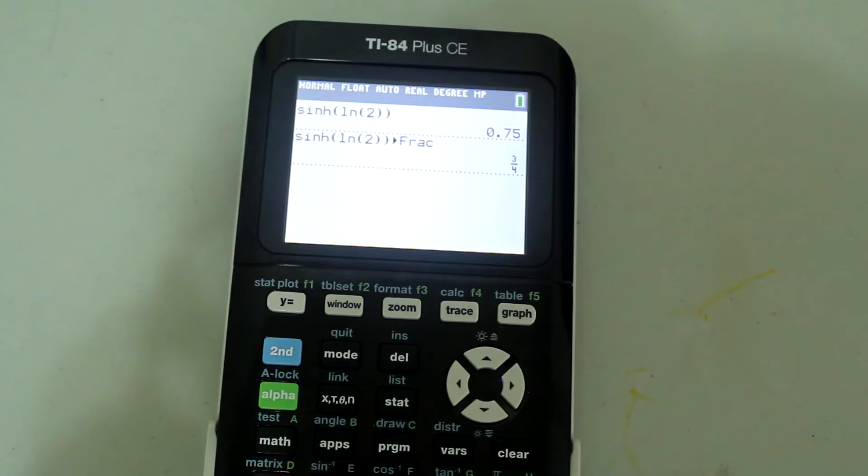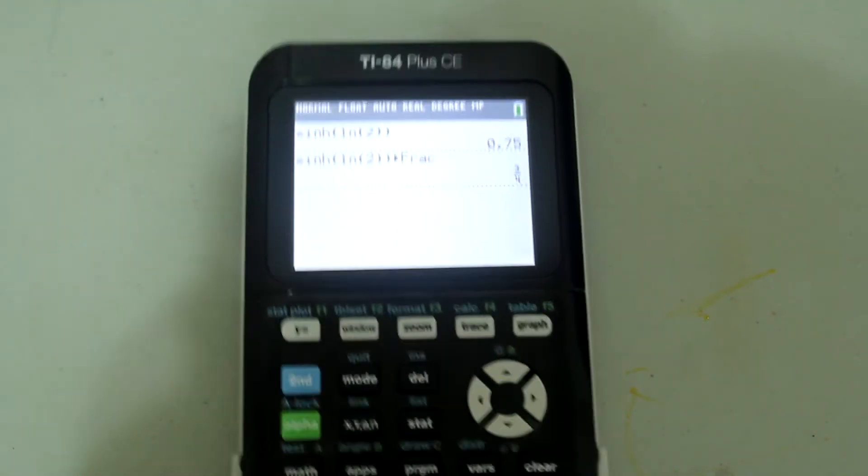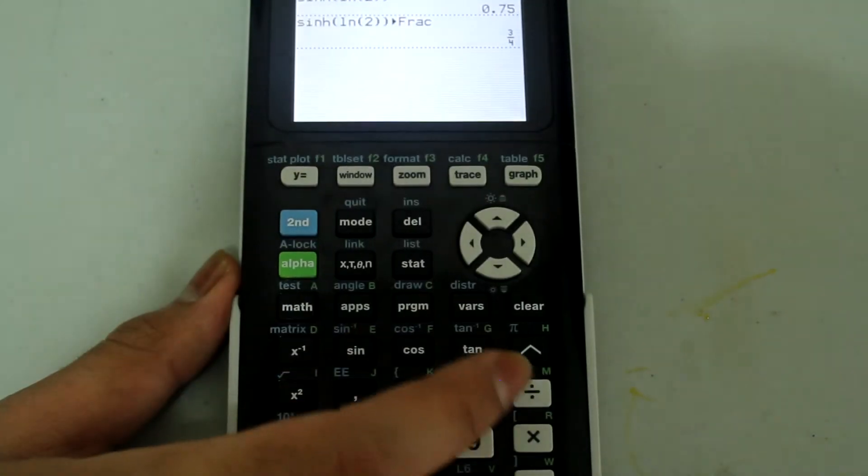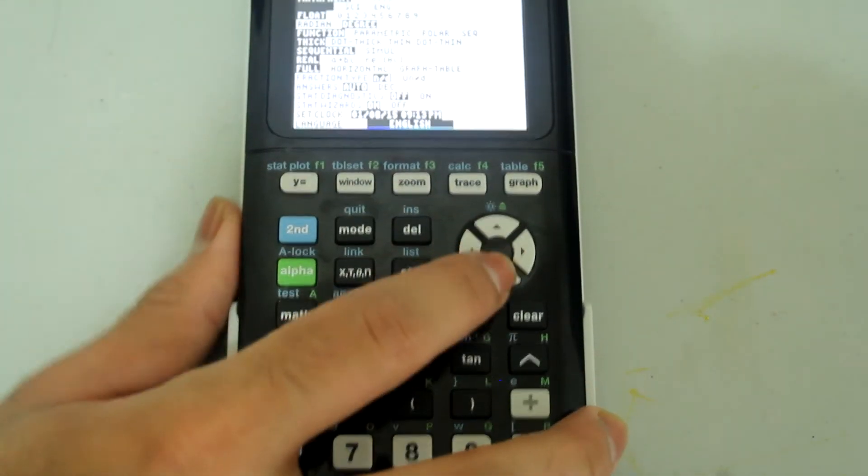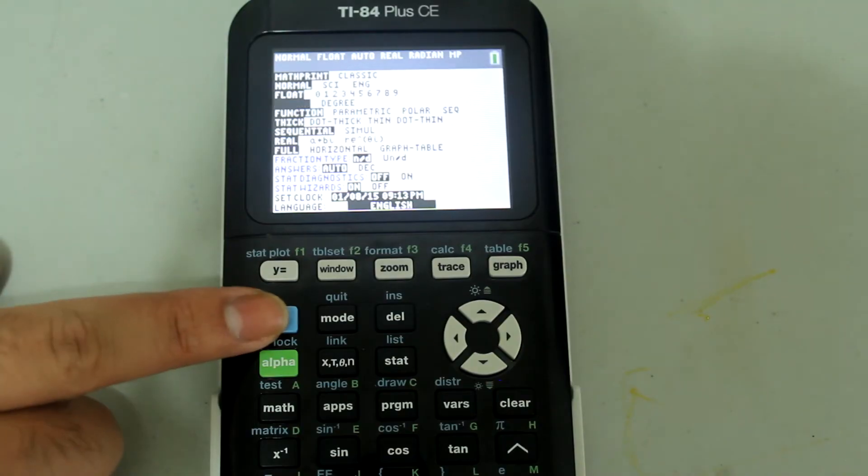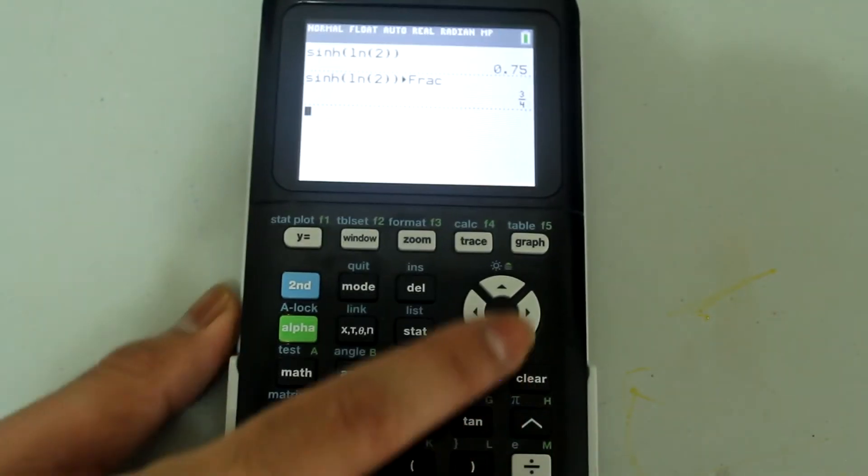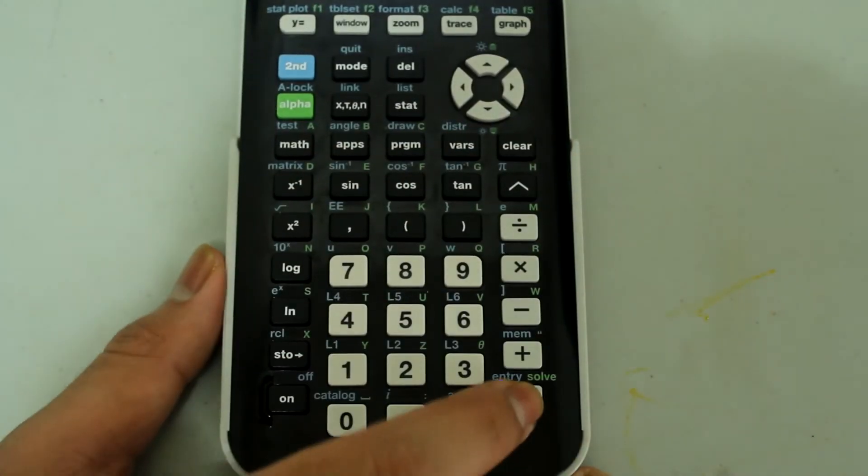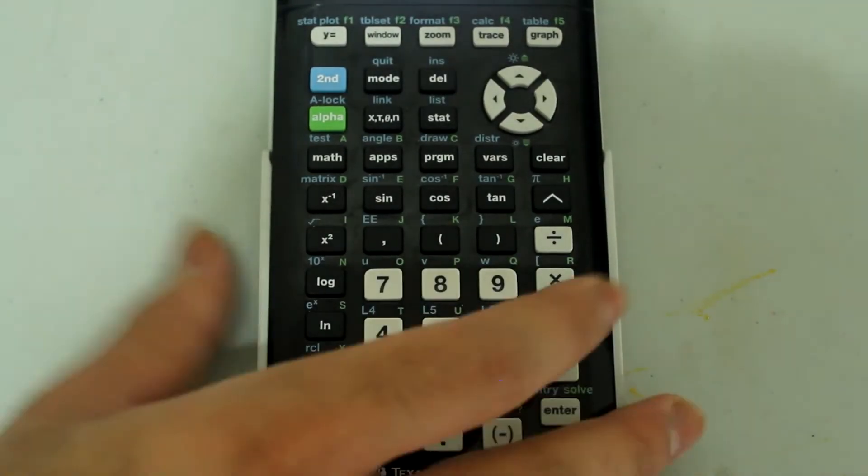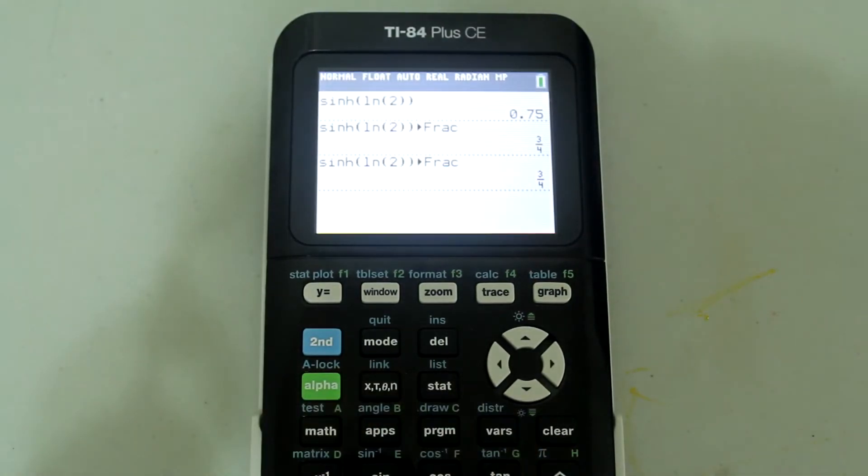It's good to note that it doesn't matter which trigonometric mode you are in when doing hyperbolic trigonometric calculations. For these previous calculations I was in degree mode, but I'm going to change to radian mode. Press Mode, arrow down to radian, and press Enter. Now I'm in radian mode. I'll quit and redo the calculation. I get the exact same answer.